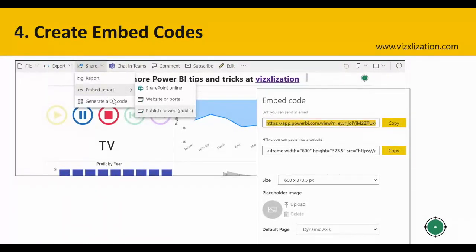Find your report in the workspace. At the top, click Share, then select Embed Report from the options. A new window pops up — select Publish to Web. Another window appears showing the embed code.